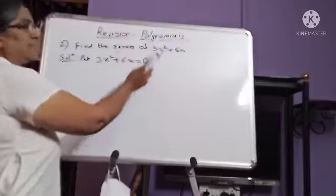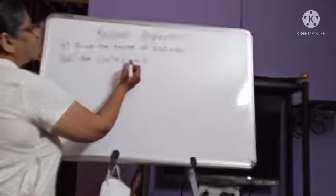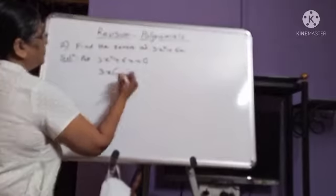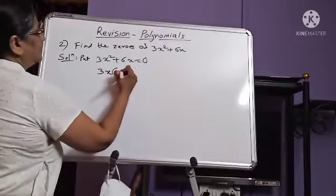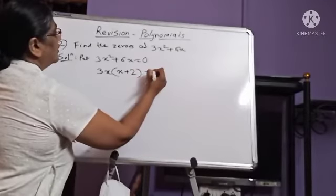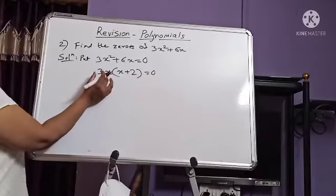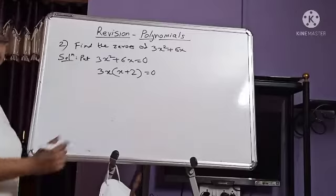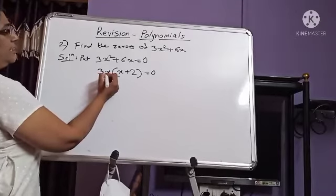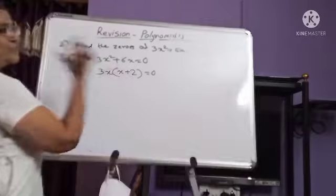So, put 3x squared plus 6x is equal to 0. Now, what are the factors here?